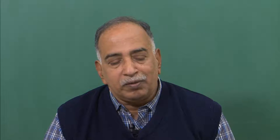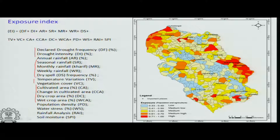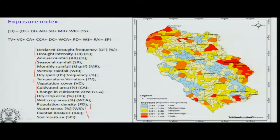We expect some amount of yield from cultivated areas; if that is not achieved, national-level food security is going to be in trouble. Population density is another factor — when water resources are available, they need to be shared among the population as well as for agriculture. These are all the different parameters used in identifying exposure to drought.